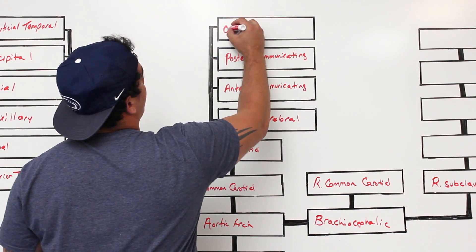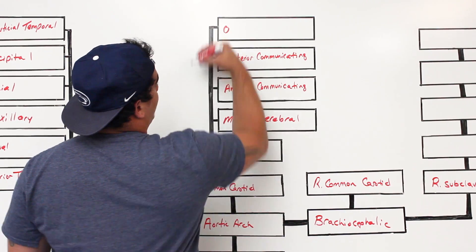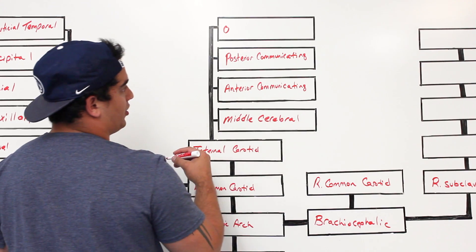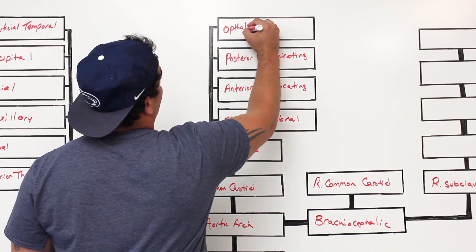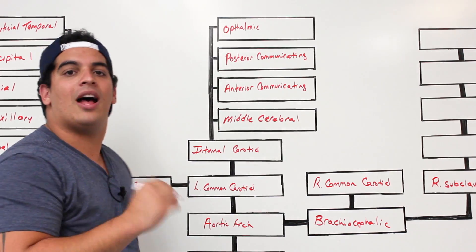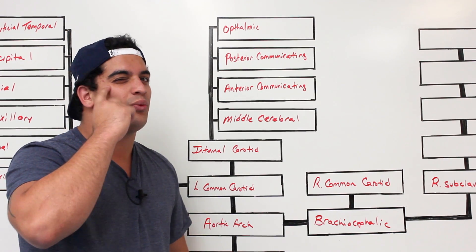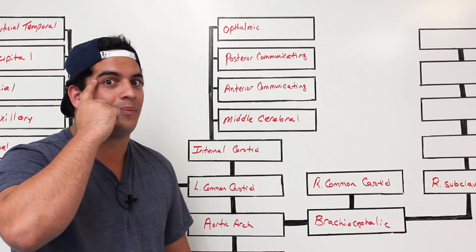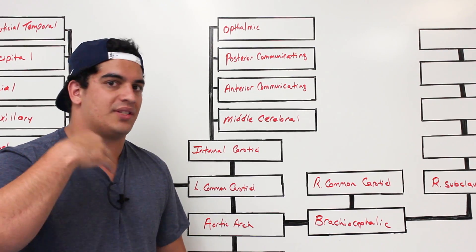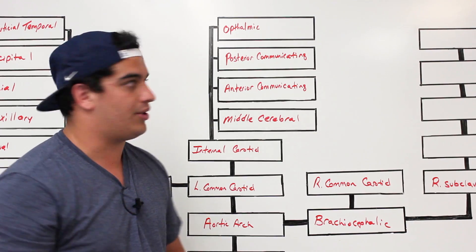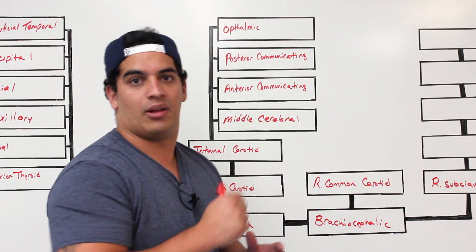Before reaching the Circle of Willis structures, the internal carotid gives off the ophthalmic artery, which supplies the eye via the central retinal artery. It also gives off ciliary arteries, lacrimal arteries, and anterior ethmoidal arteries. There are many branches, but we're just covering the basic concept of blood flow here.